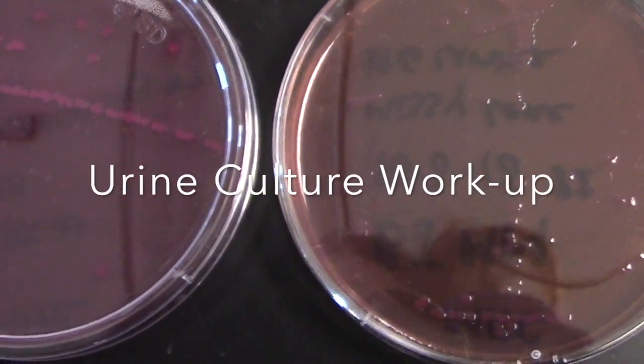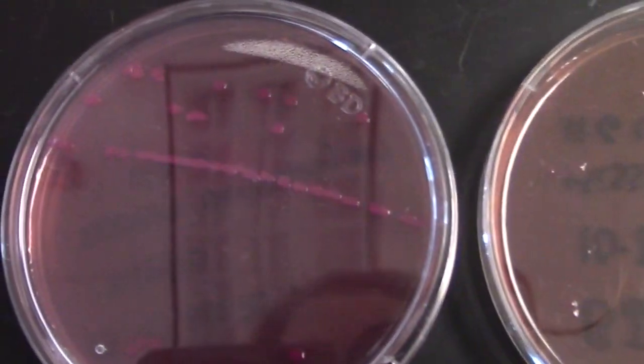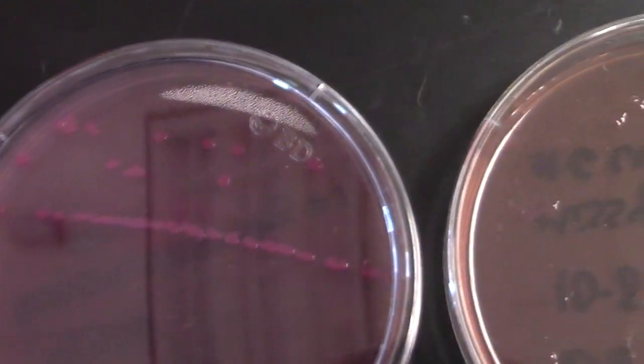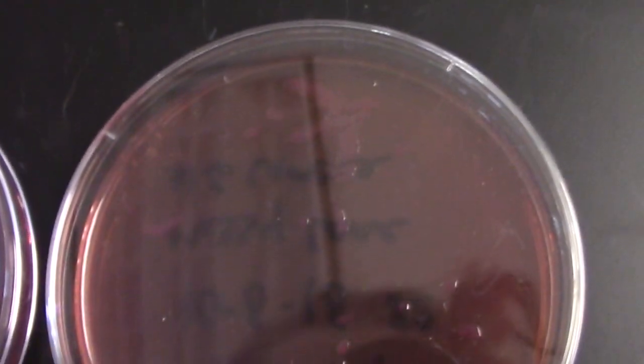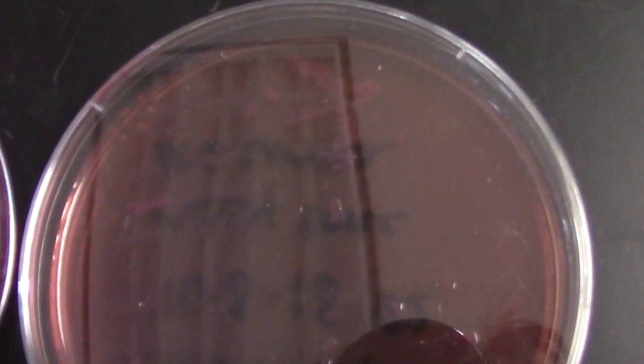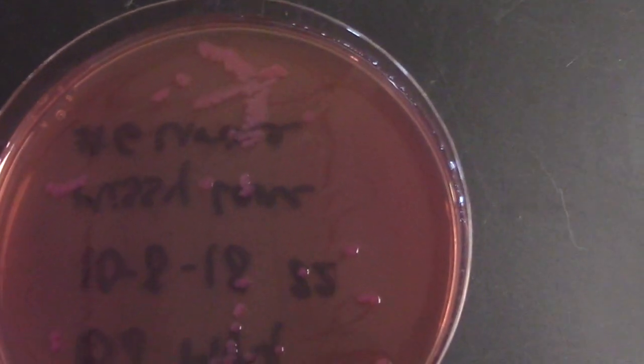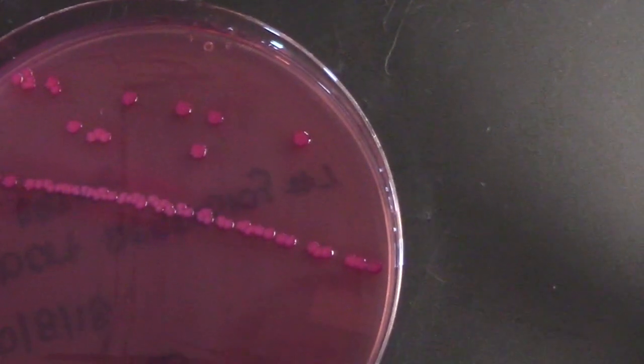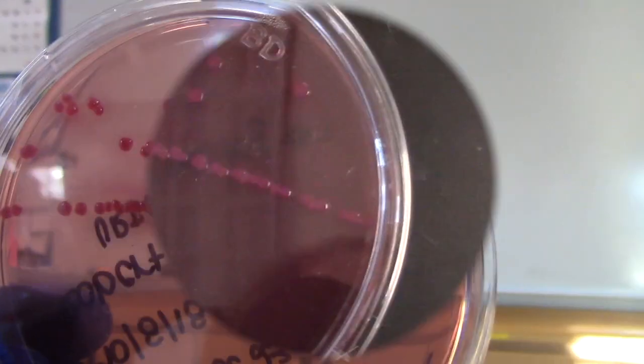As part of our urine culture workup, we're going to be looking at our cultures on the McConkey agar to look for lactose fermentation. A non-lactose fermenter is going to show tan colonies. A lactose fermenter will show dark pink-purple colonies.